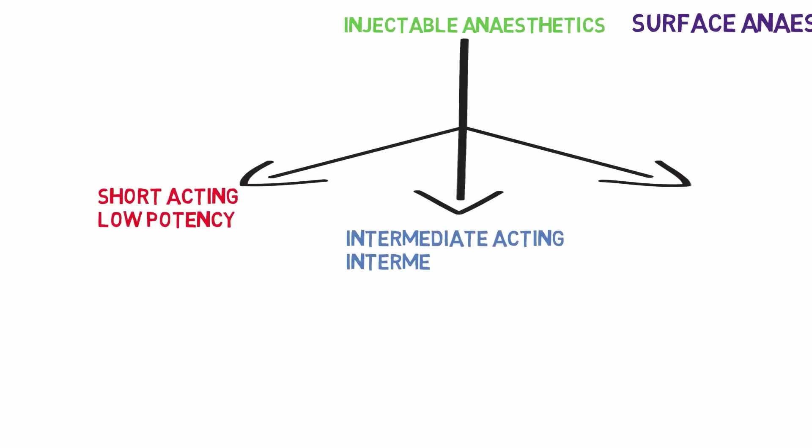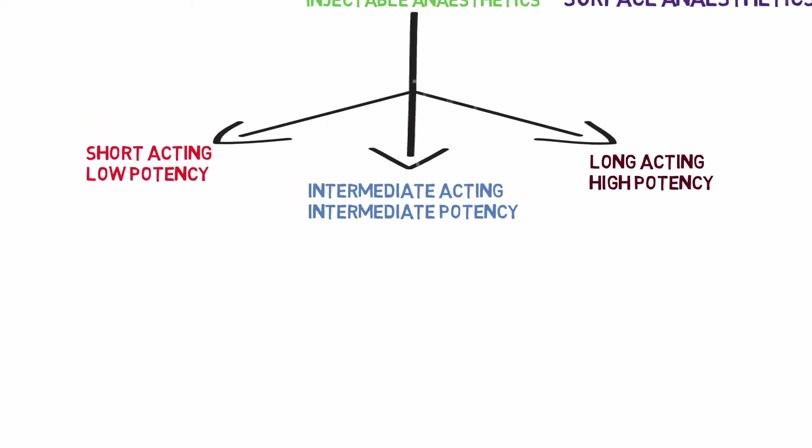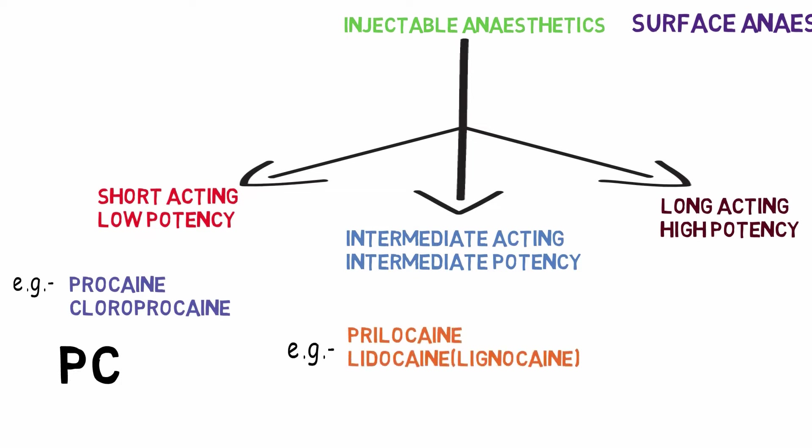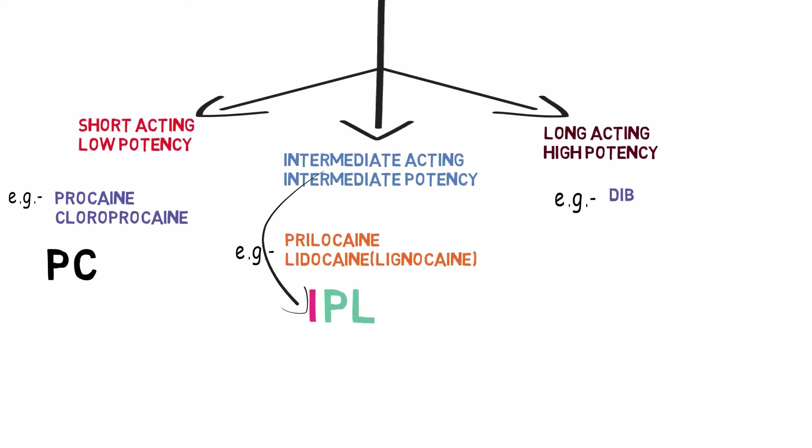Injectable anesthetics are further divided into three types: short-acting low potency, intermediate-acting intermediate potency, and long-acting high potency. The examples of short-acting low potency drugs are procaine and chloroprocaine. The examples of intermediate-acting intermediate potency drugs are prilocaine and lidocaine. And the examples of long-acting and high potency drugs are dibucaine, ropivacaine, tetracaine, and bupivacaine.